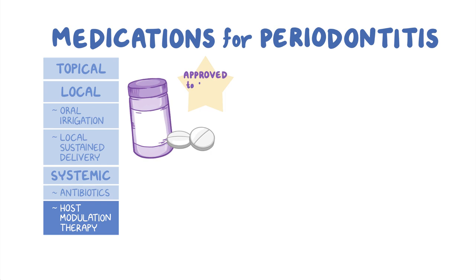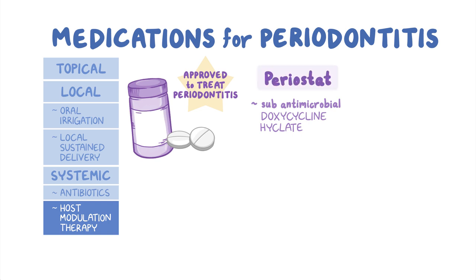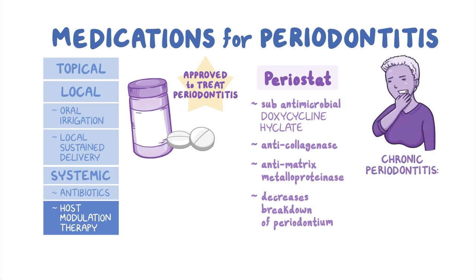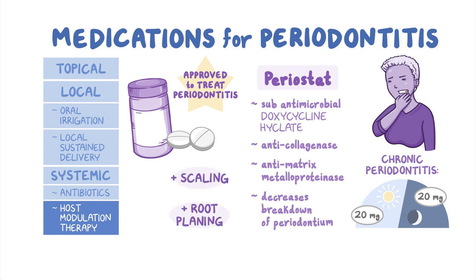The only agent approved to treat periodontitis is sub-antimicrobial dose of doxycycline hyclate. The brand name is Periostat. It has an anti-collagenase and anti-matrix metalloproteinase activity in the gingival crevicular fluid, which decreases the breakdown of supporting structures in the periodontium. Individuals with chronic periodontitis should take 20 milligrams, or one capsule, of Periostat two times a day. Periostat can be used as an adjunct to scaling and root planing because this combination is more effective than scaling and root planing alone.